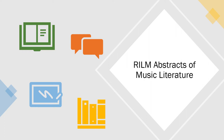RILM Abstracts of Music Literature is a subscription database you can find on the library's A-Z database list. RILM is an index of scholarship about music. This means that it includes information about as many books, articles, chapters, and dissertations as possible. But it's not tied to our collections, so it includes information about these sources whether or not UWM has direct access to them.